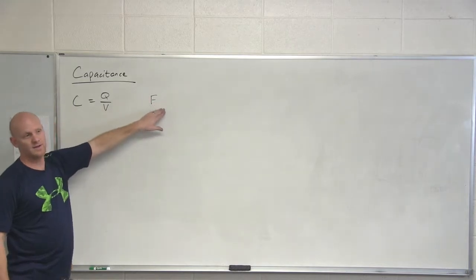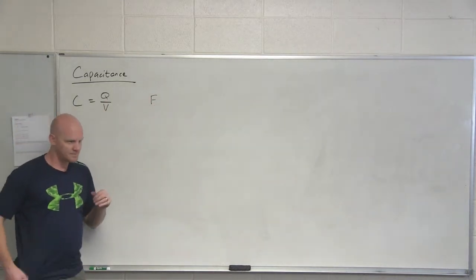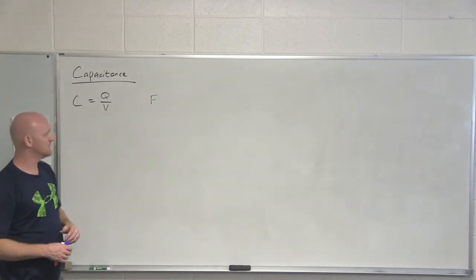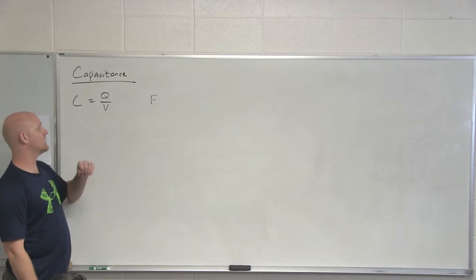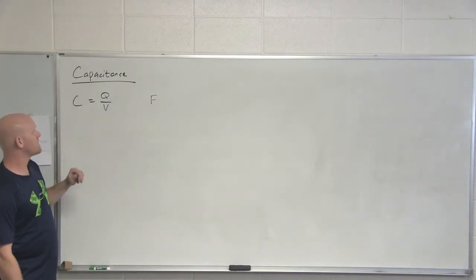But if you notice, what would a farad be then? A coulomb per volt. And if you recall, a volt was a joule per coulomb, and so then it might be a coulomb squared per joule or different ways to look at things. But farad - and keep in mind as long as we use SI units, everything always works out in SI units.